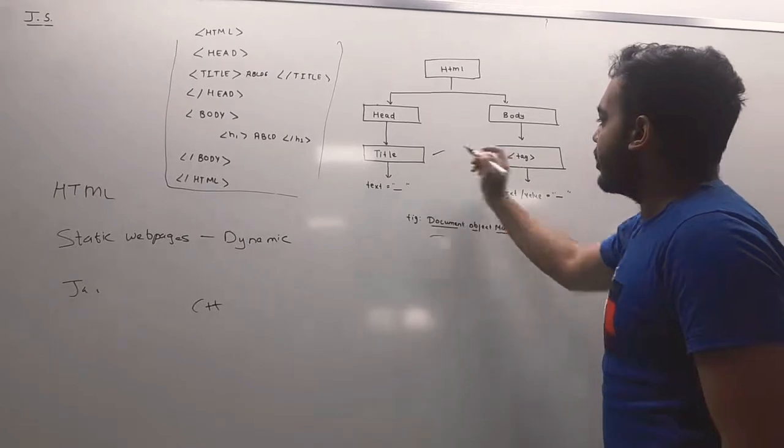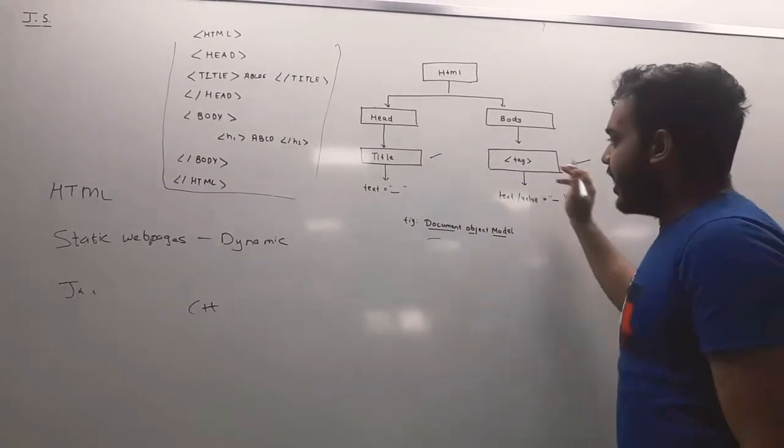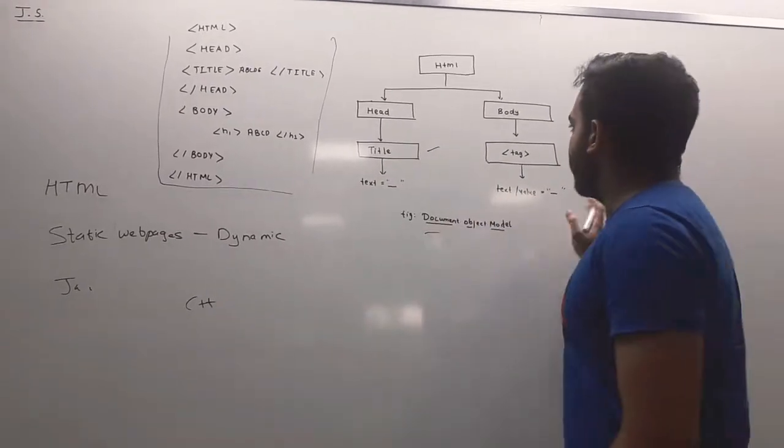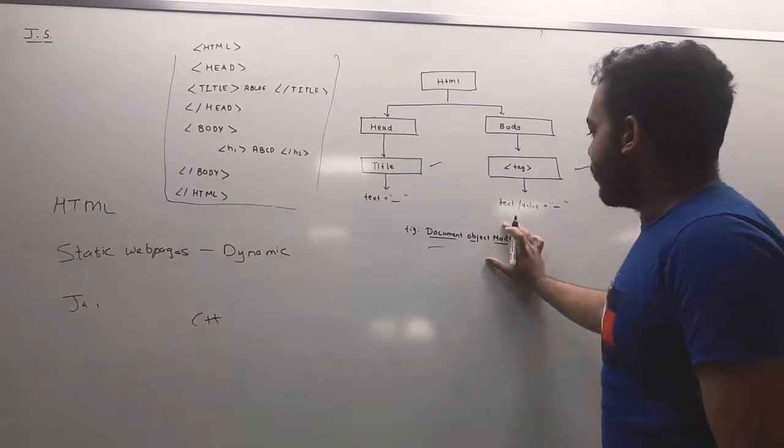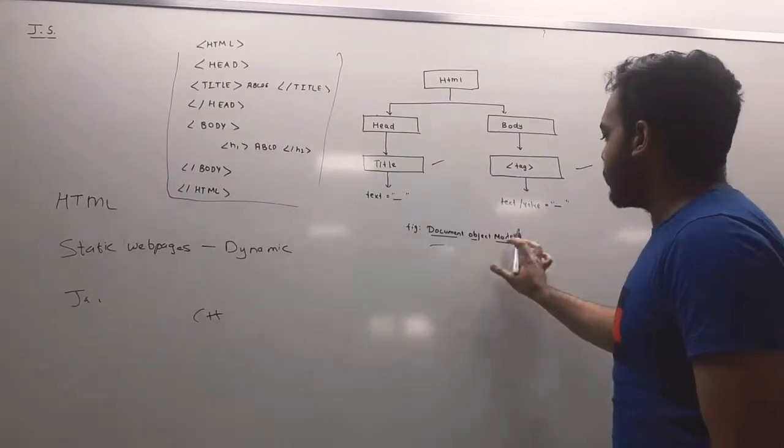In document object model, we can input the details dynamically at run time. So this is the main thing about document object model.